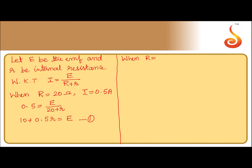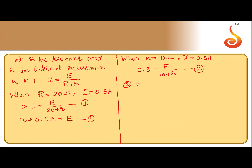When R is equal to 10 ohm, it is given that i is equal to 0.8 ampere. So we get 0.8 is equal to e divided by (10 + r). Let us call this equation 2. Now divide equation 2 by equation 1.